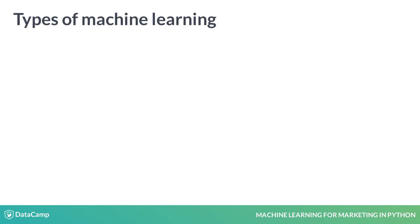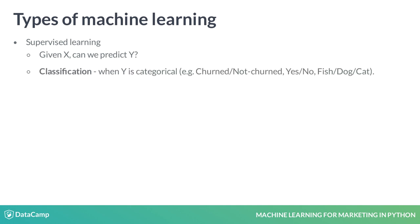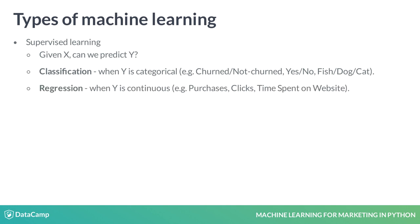Let's start with describing three different types of machine learning. The first one is supervised learning. These models use data about observations to predict the target variable. There are two kinds of supervised learning: classification and regression. In classification, we attempt to predict a categorical variable or a class. In the next chapter, we will build a classification model predicting whether a customer will churn. In the third chapter, we will build a regression model to predict customer purchases in the next month.